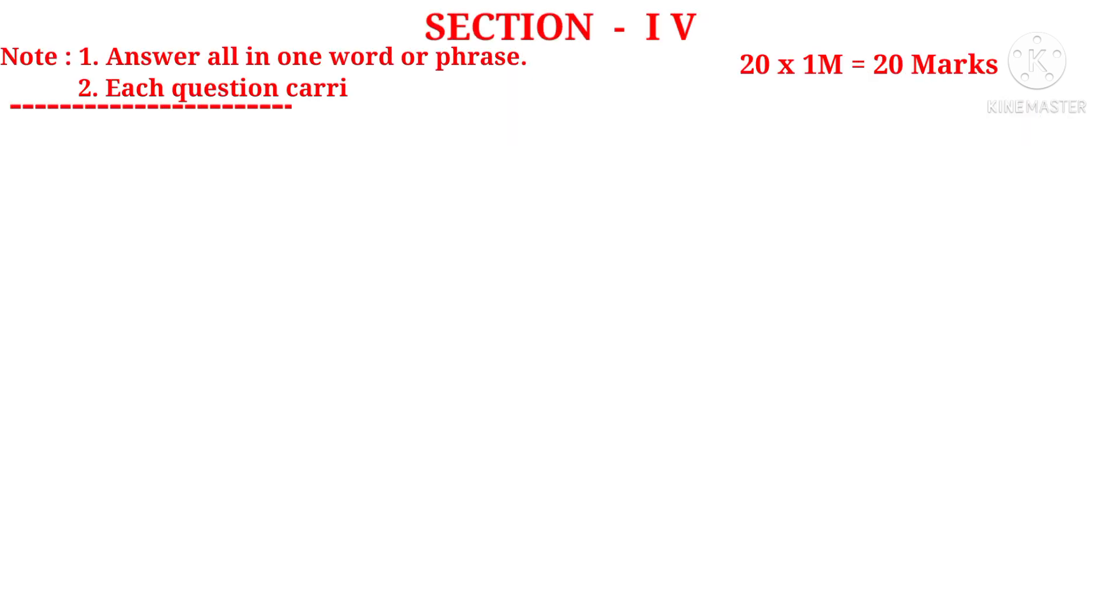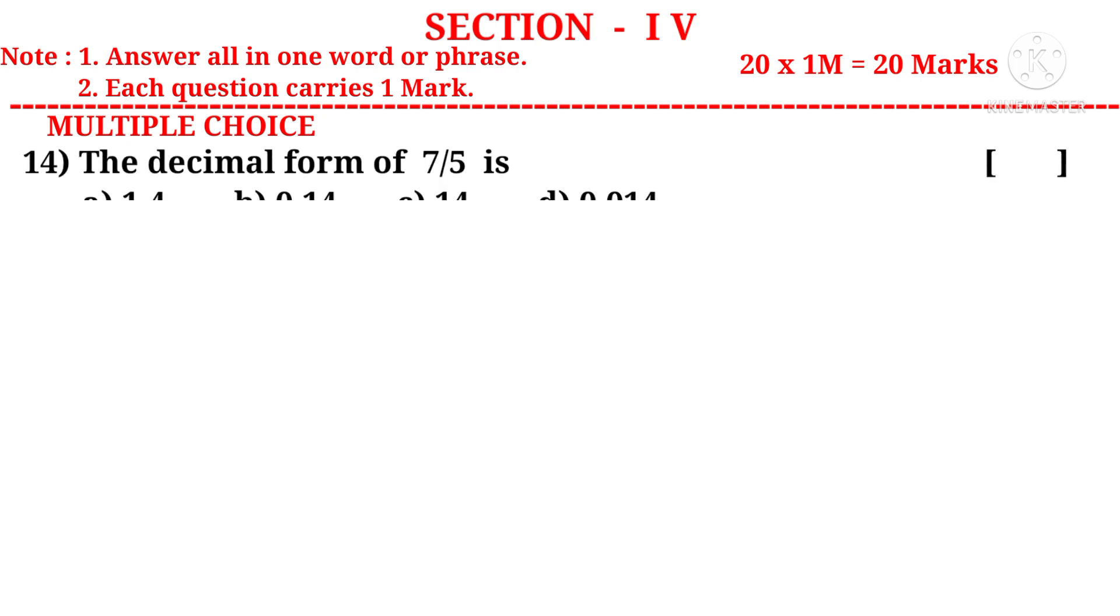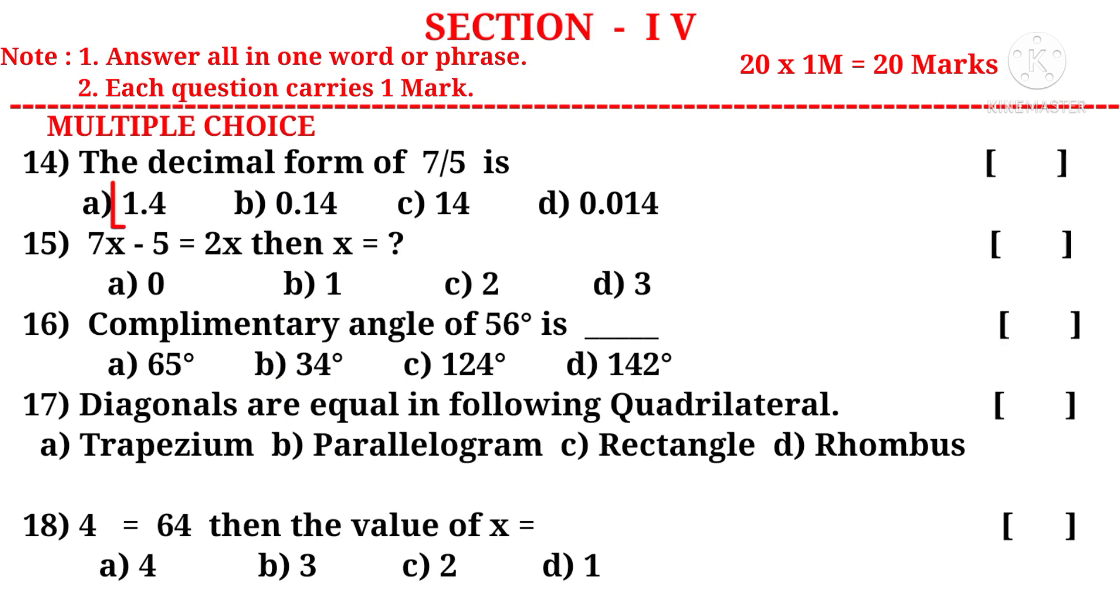Now let us see Section 4. Note: answer all in one word or phrase. Each question carries 1 mark, there are 20 bits, so 20 into 1 mark is 20 marks. Now let us take multiple choice questions. Question 14: The decimal form of 7/5 is. Let us divide 7 by 5. 5 ones are 5. By subtraction we get 2. Put a decimal point, take 0. 5 fours are 20. By subtraction we get the remainder 0. So the quotient 1.4 is the answer. The correct choice is A.